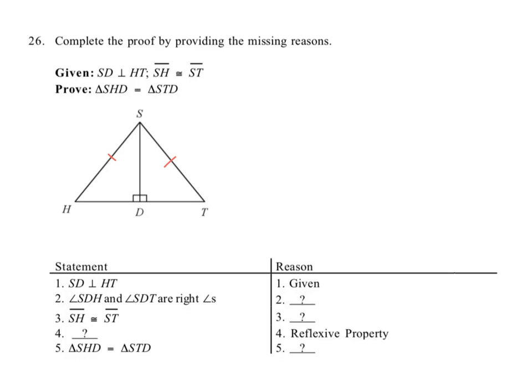Angle SDH, it's right here, and SDT are right angles. How do we know that? Well, even though in the drawing it's marked as right angles, the reason why they mark it that way is because it's given that SD is perpendicular to HT. So how do we actually give a reason for the fact that they're right angles?